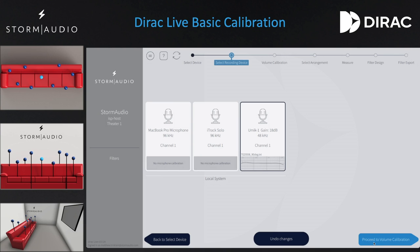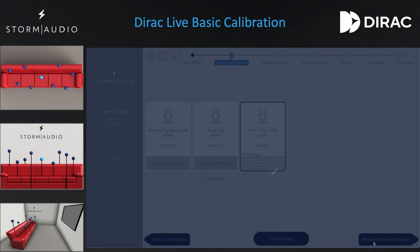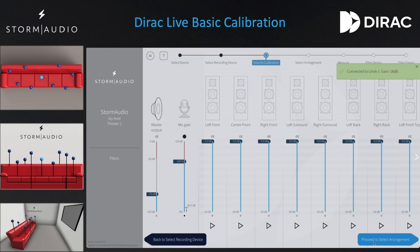We may now proceed to the volume calibration. Volume calibration is crucial to a good calibration. The microphone will begin in the sweet spot or primary listening position, which is normally the center or near the center of the listening area, and will then move all around the listening area, causing the microphone to become quite close and quite far away from certain speakers in the room. This means the volume needs to be low enough for when the microphone is close to avoid a clipping error, but high enough for when the microphone is far away to avoid a low signal-to-noise ratio error.